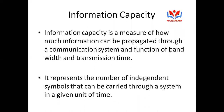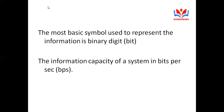Information capacity represents the number of independent symbols that can be carried through a system in a given unit of time. The most basic symbol used to represent information in information capacity is the bit. The information capacity of a system is measured in terms of bps — that is, bits per second.